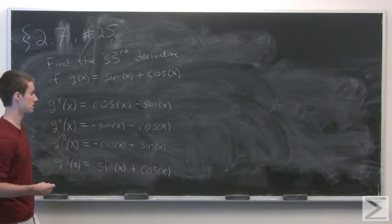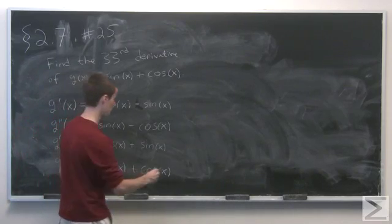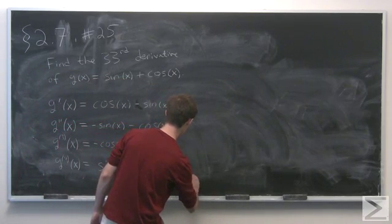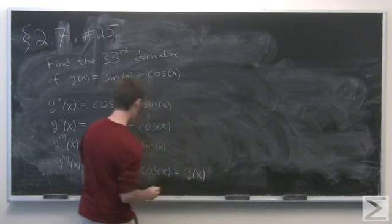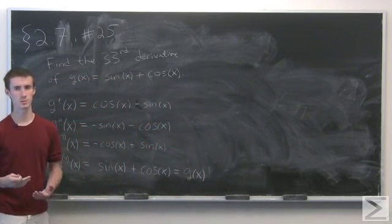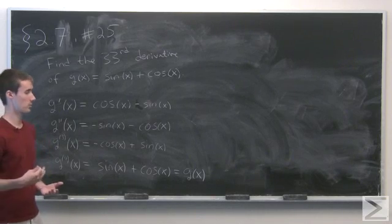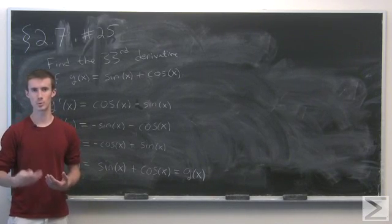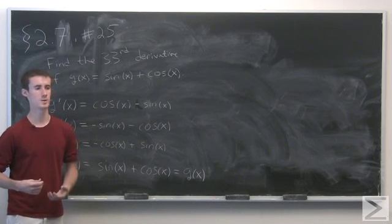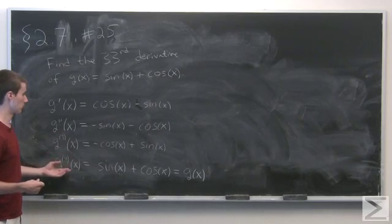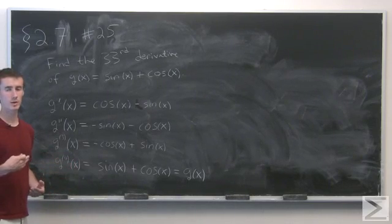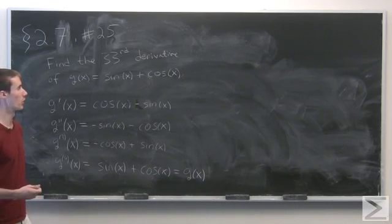So the fourth derivative of g equals g(x) itself. Rather than computing the derivatives over and over again, we'd just be repeating ourselves every four times we take the derivative. The fourth derivative equals g(x), so the eighth, the twelfth, and all multiples of four also equal g(x).